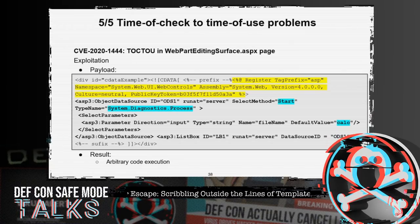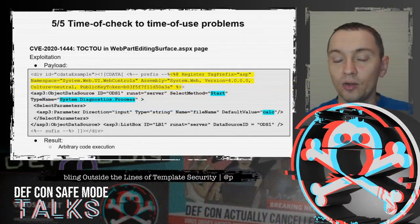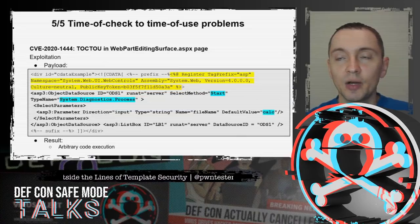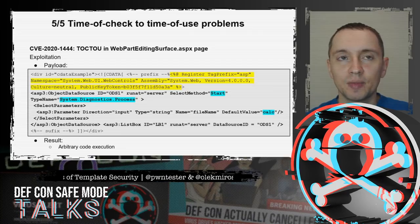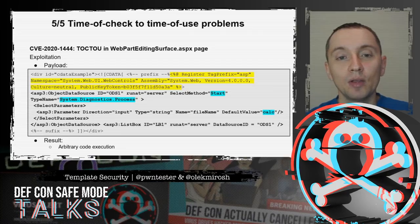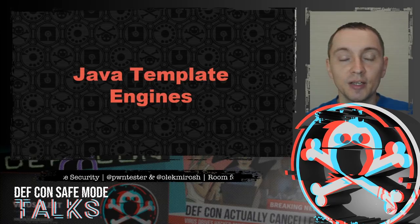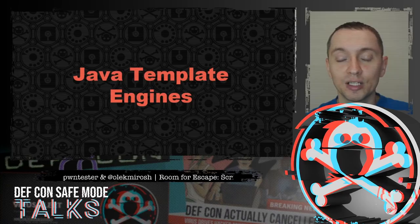In this part of our talk we saw multiple ways to achieve arbitrary code execution on the SharePoint server as a regular user. These vulnerabilities revealed five different types of security problems in content management systems. Now let's switch to Álvaro, who will present more vulnerabilities with templates for dynamic content in different Java frameworks and products.